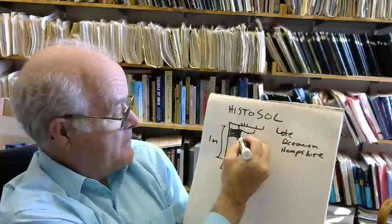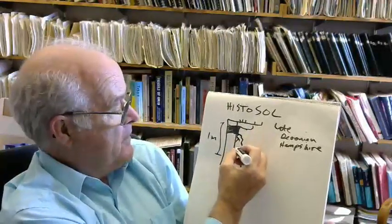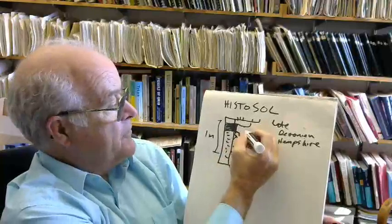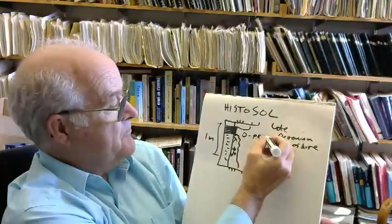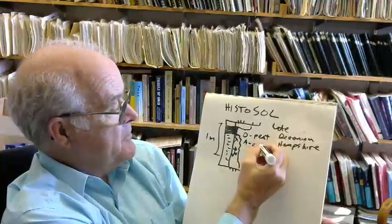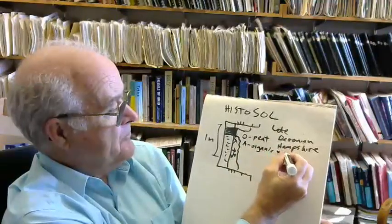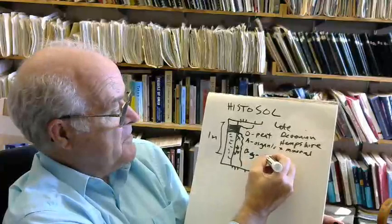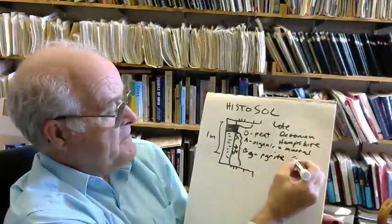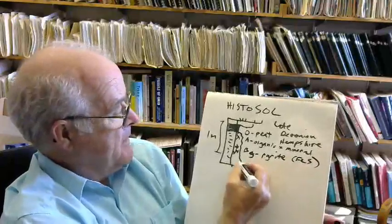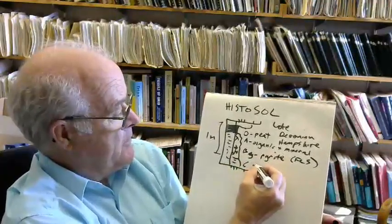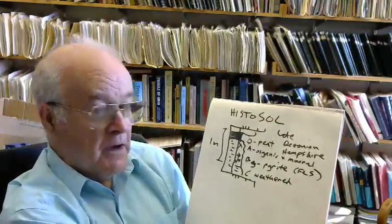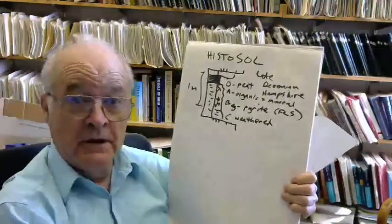Now, then there is a clay zone, like so, with roots. And then there is pyrite. So this is the O horizon, which is basically peat. This is the A horizon, organic plus mineral. This is a Bg horizon, which in this case is pyrite enriched. Pyrite is FeS2. And then here we have C, which is weathered material.